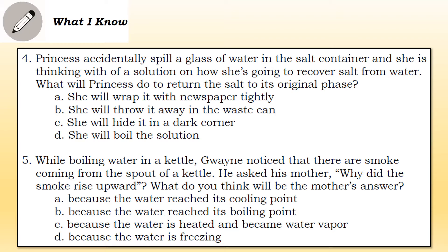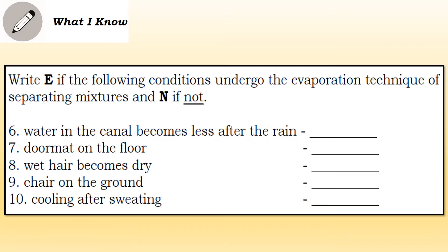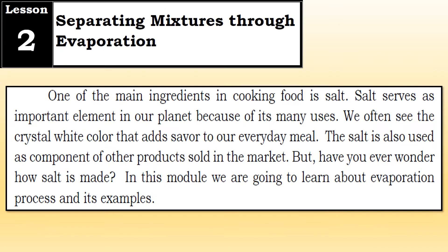D) Because the water is freezing. Now write the letter E if the following conditions undergo the evaporation technique of separating mixtures, and N if not. Number six: Water in the canal becomes less after the rain. Number seven: Door mat on the floor. Number eight: Wet hair becomes dry. Number nine: Chair on the ground. Number ten: Cooling after sweating.